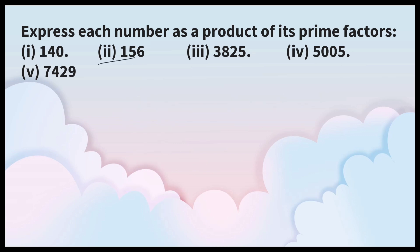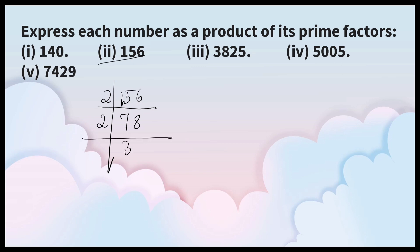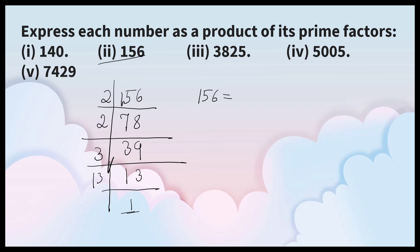Now let us solve the second one, that is 156. It is an even number, so it is divisible by 2: 2 × 78. Once again it is even, divisible by 2: 2 × 39. 39 is odd. Check if it is divisible by 3 — yes, it is: 3 × 13. 13 is a prime number, so 13 × 1 = 13. Therefore, 156 = 2² × 3 × 13.